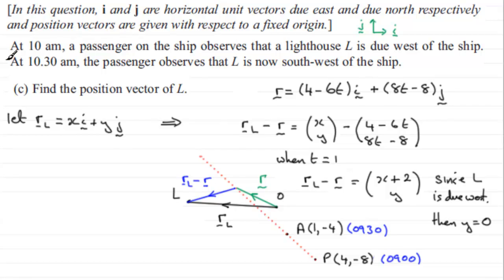So what we need to do now is just work out what x is. And we're told that at 10:30 a.m. the passenger observes that L is now southwest of the ship. Well 10:30 a.m. is one and a half hours after it left the port P. So if we just say when t equals 1.5, into here what we get is that therefore r_L minus r equals x. And then 6 times 1.5 is 9. 4 minus 9 is minus 5. And so you've got x minus minus 5. So x plus 5. And then for the bottom here we know that y is 0 now. So you've just got for one and a half, 8 times 1.5 is 12. 12 minus 8 is 4. And you've got minus 4. So that's just going to be minus 4.